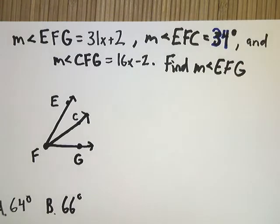The measurement of angle EFG equals 31x plus 2. The measurement of angle EFC is equal to 34. And the measurement of angle CFG is equal to 16x minus 2. So I need to find EFG.